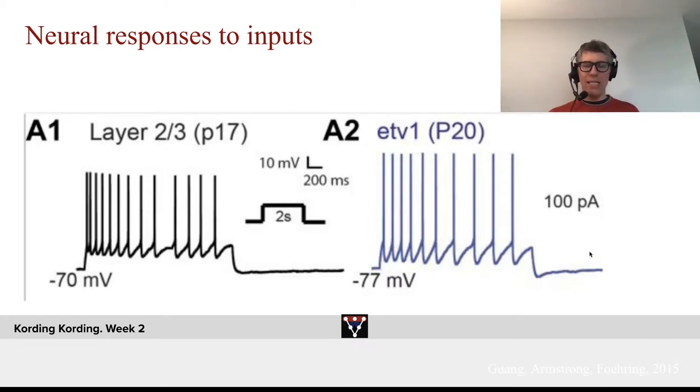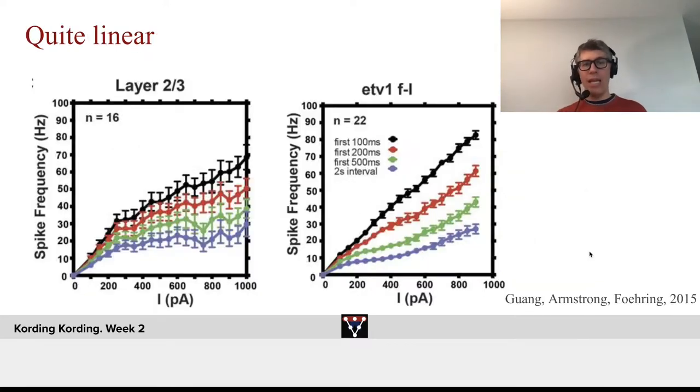And then we can see, what happens if we put more or less current into the cell? And here you see examples from two cell types. What you see on the x-axis is the current that we put in. The farther we are to the right, the stronger we drive the cell. On the y-axis, you have the spike frequency, which is how many spikes do I get per second. You see roughly the range here. When we stimulate cells, their activity might go up to 50 Hz or so.